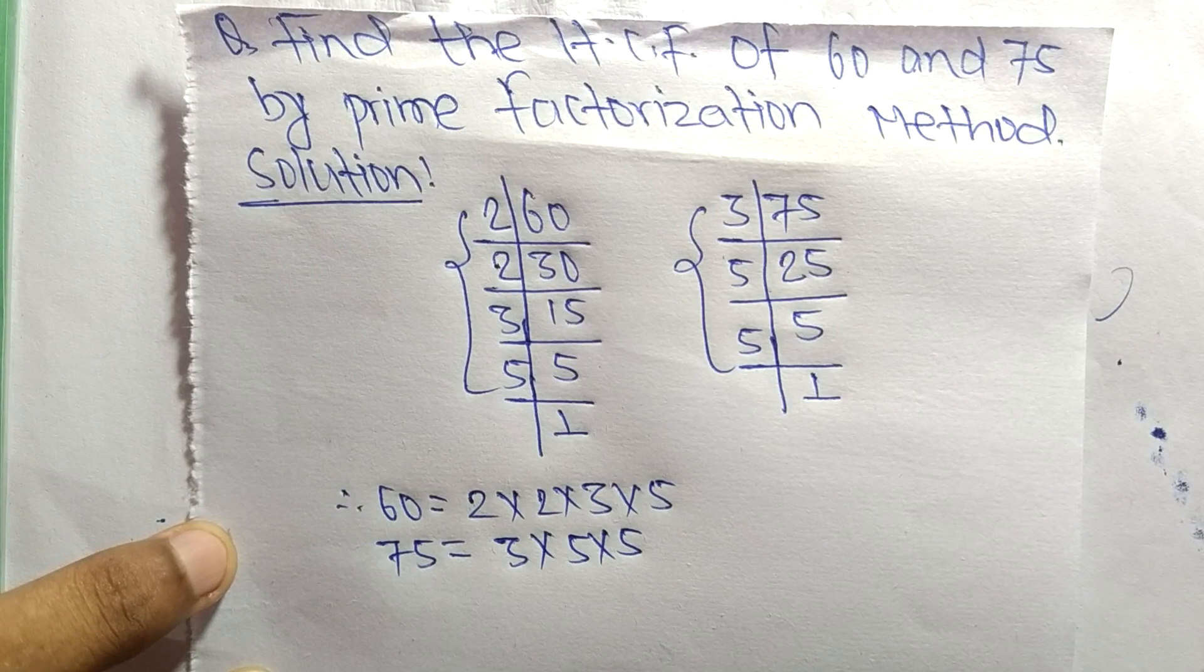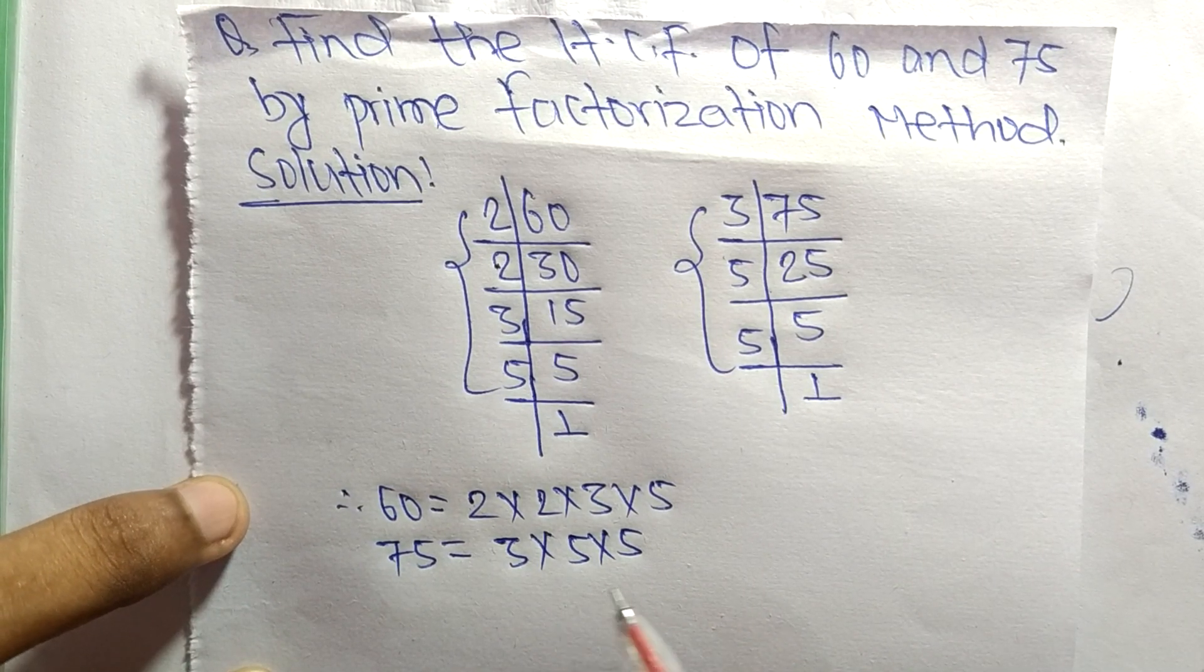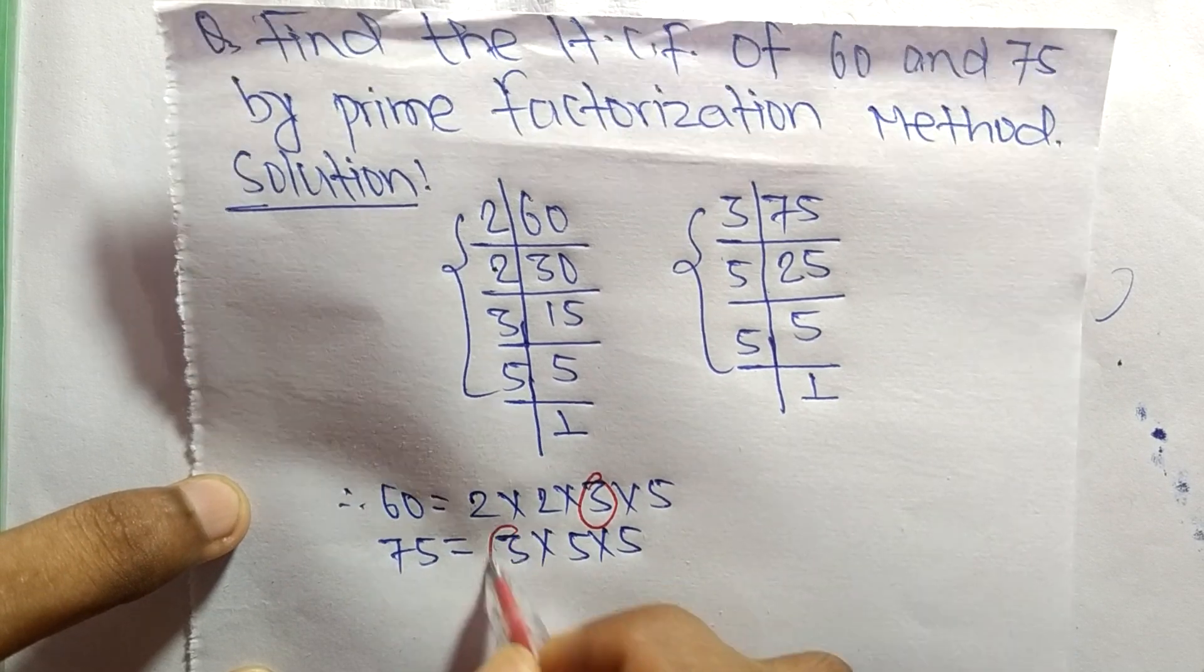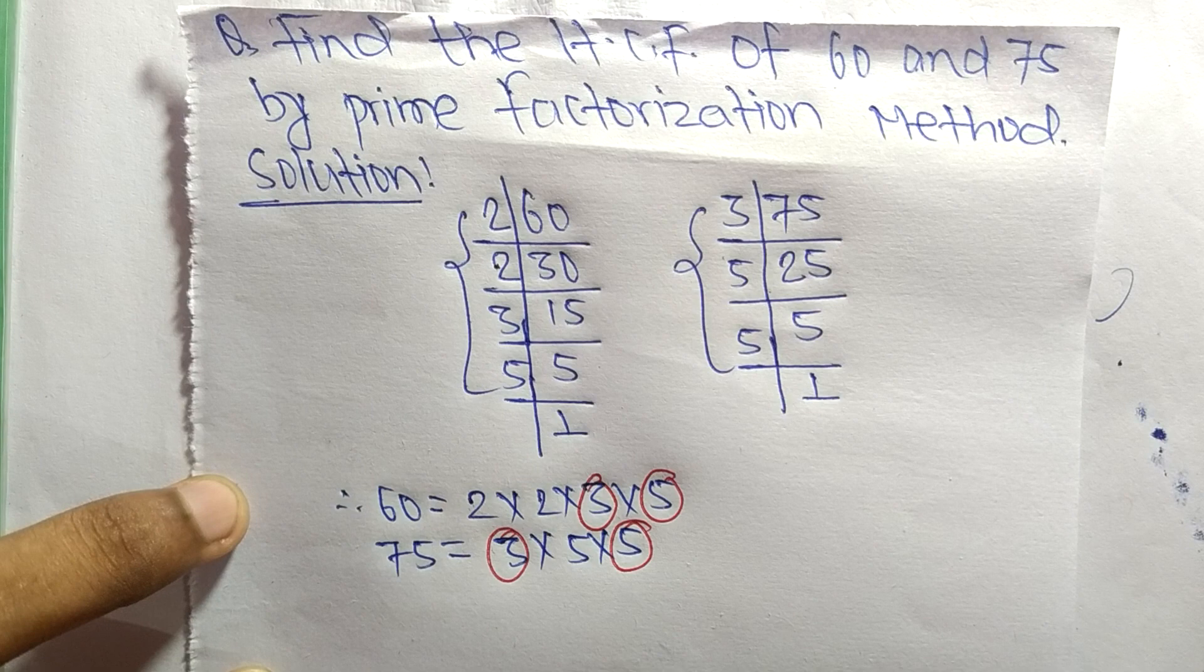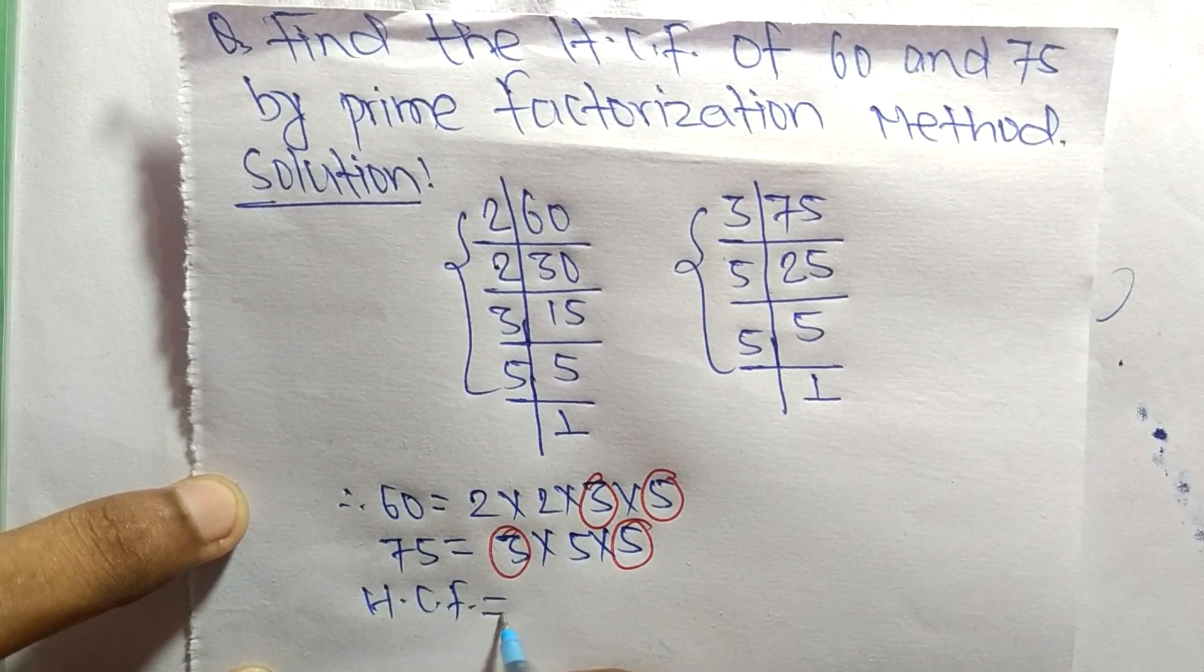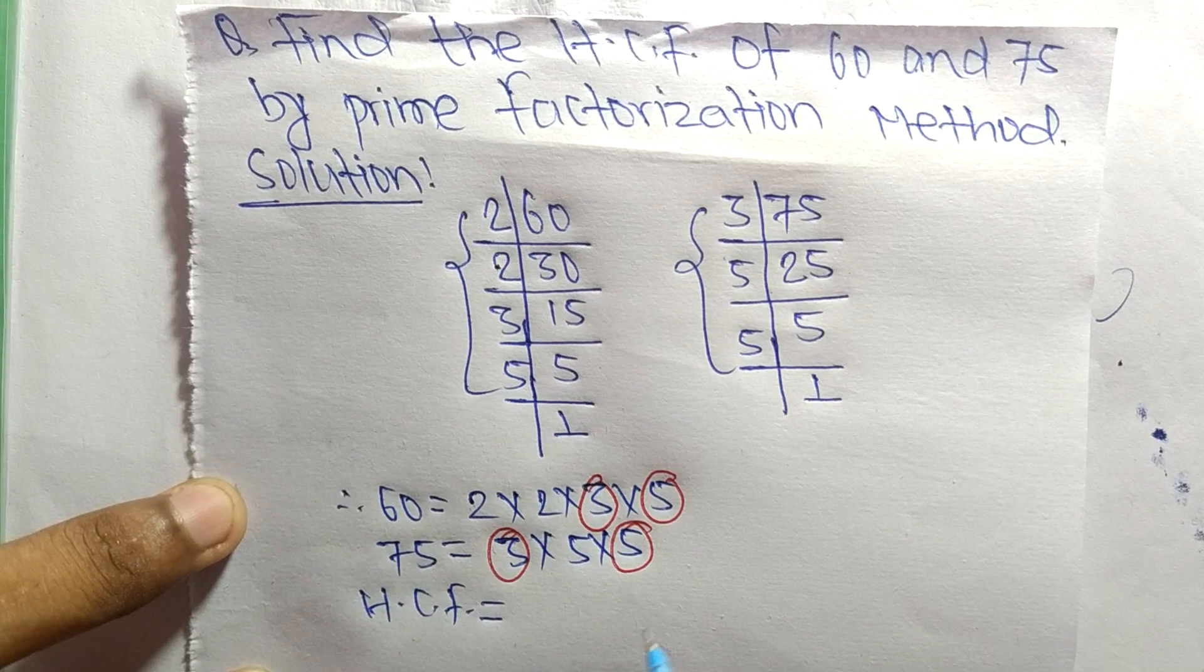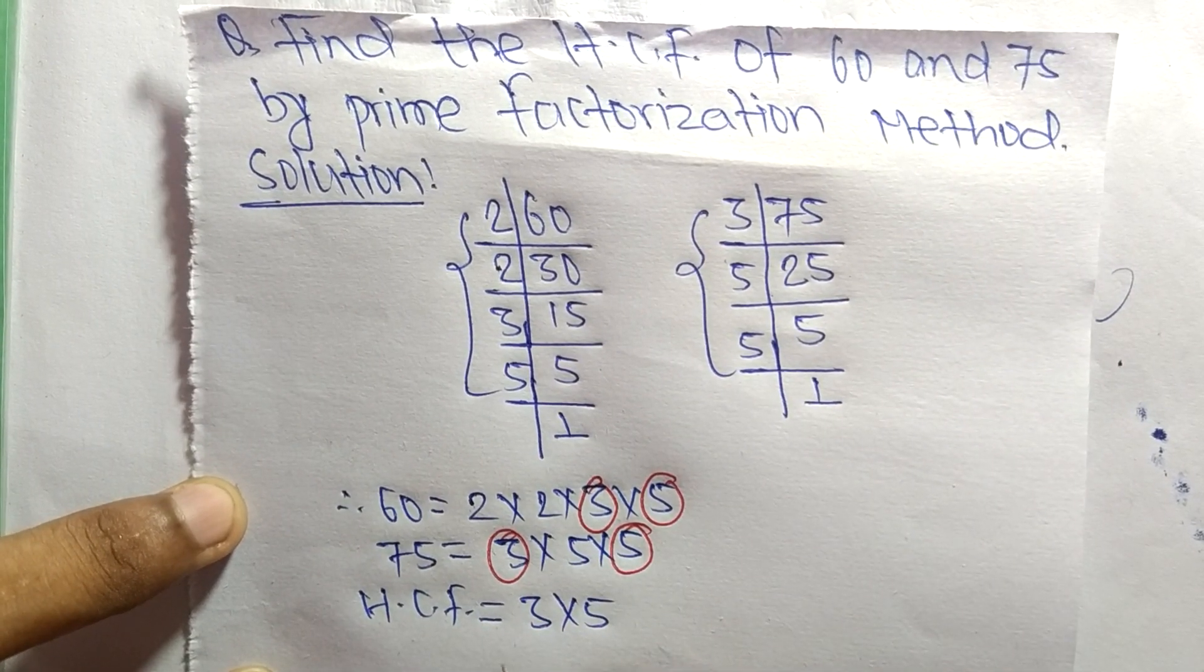Now we select the common factors in these prime factorizations. The common factors are 3 and 5. The HCF equals the product of common factors, which are 3 and 5.